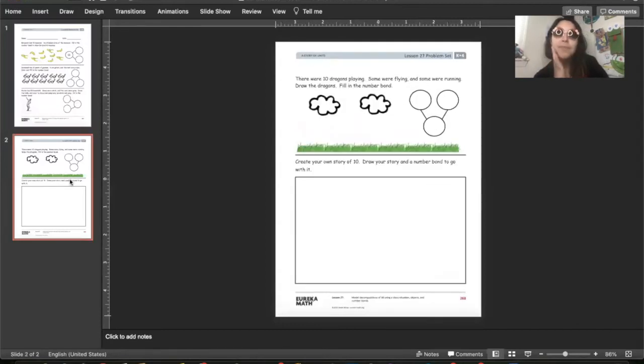The next page, there are 10 dragons playing. Some were flying and some were running. Draw the dragons and fill in the number bond. This is your opportunity to find number partners of 10 that are different from the ones you have already seen in the previous page and the page that you just did.